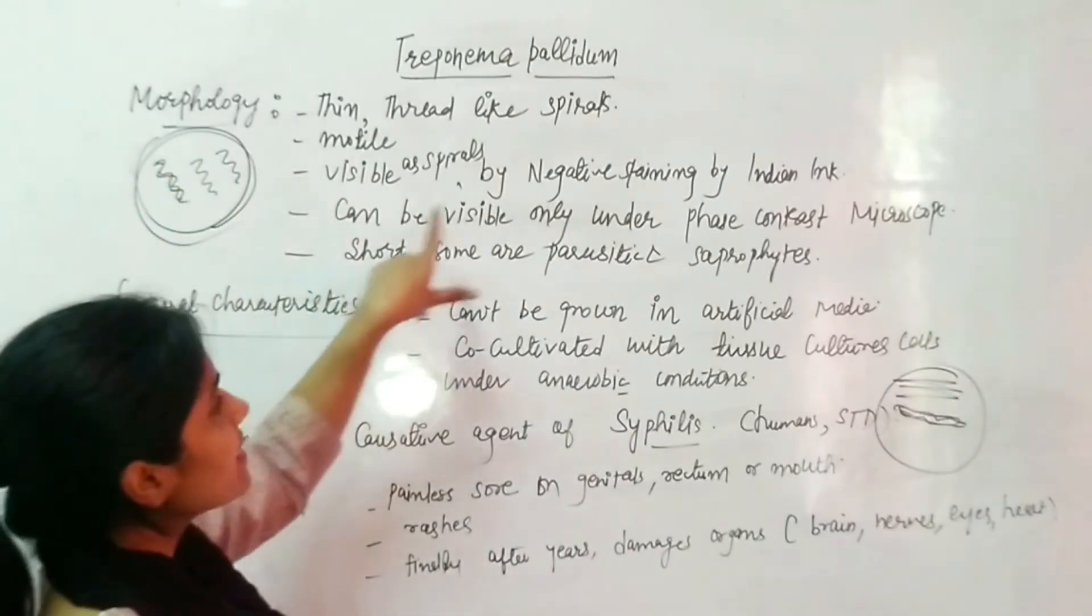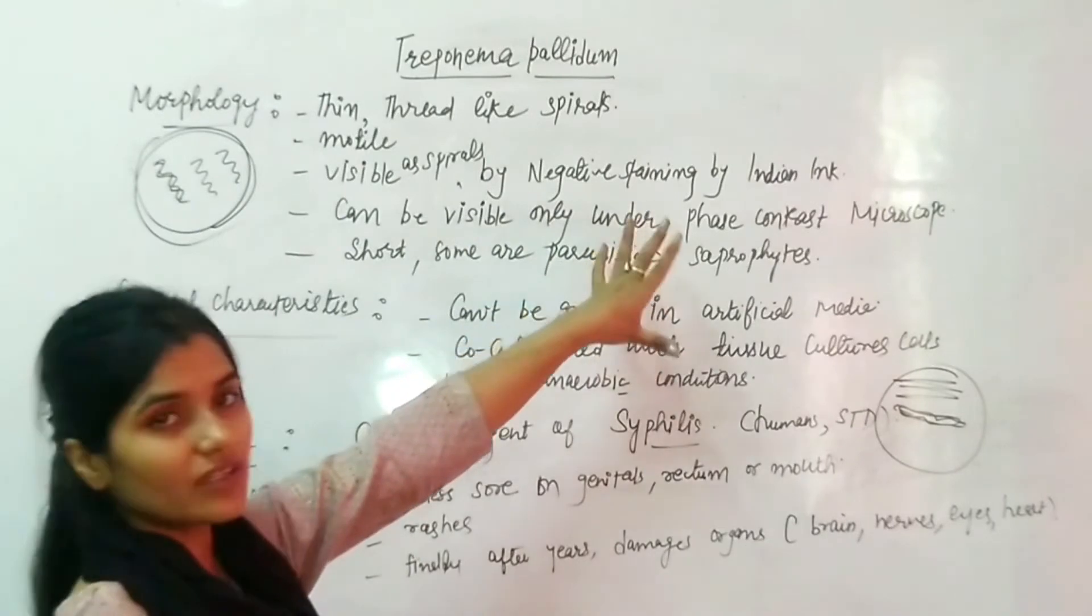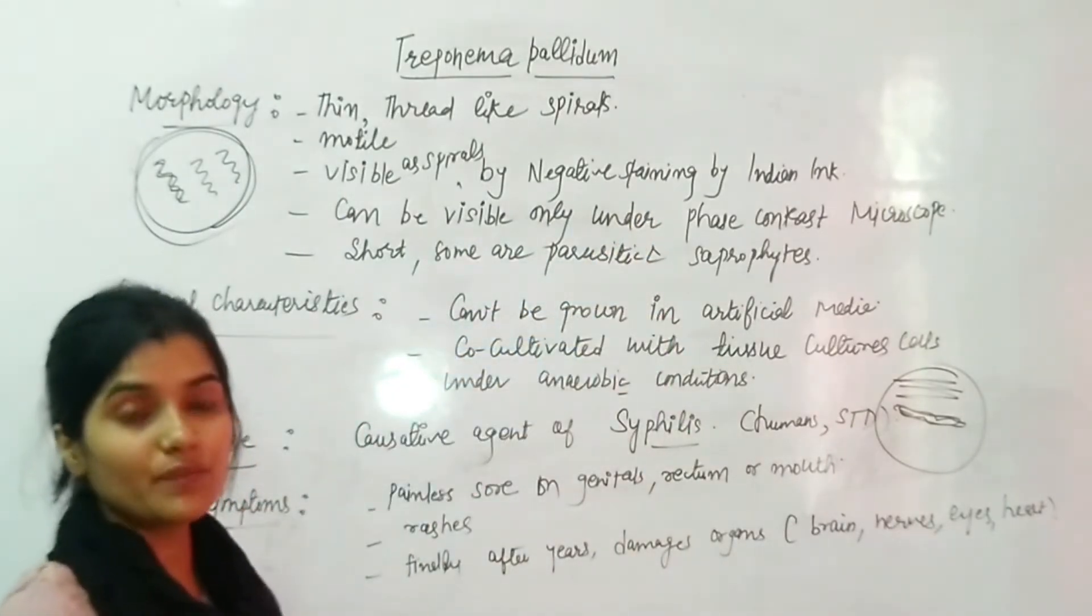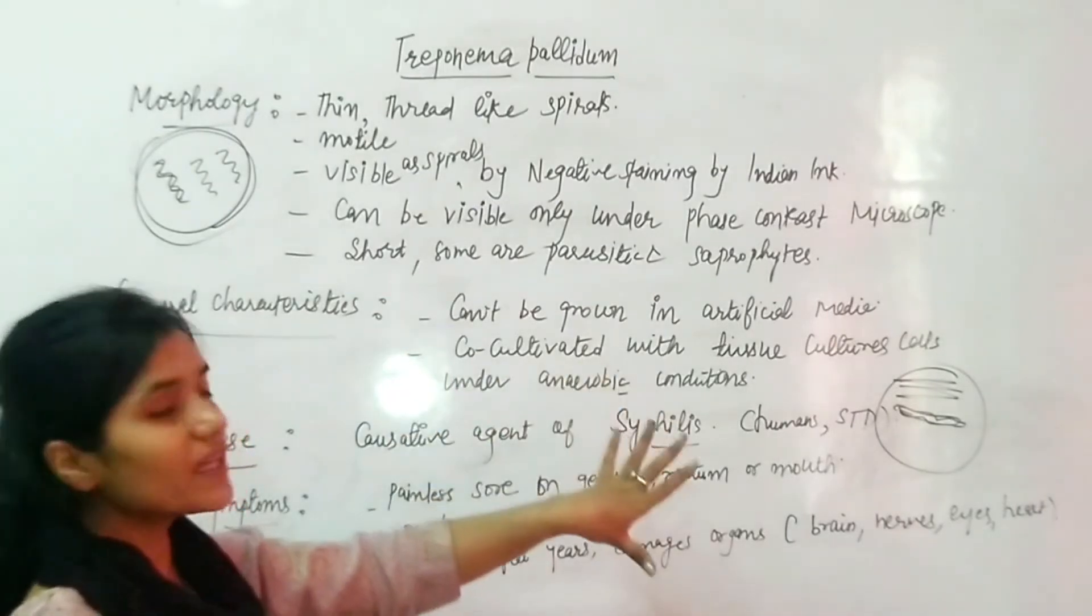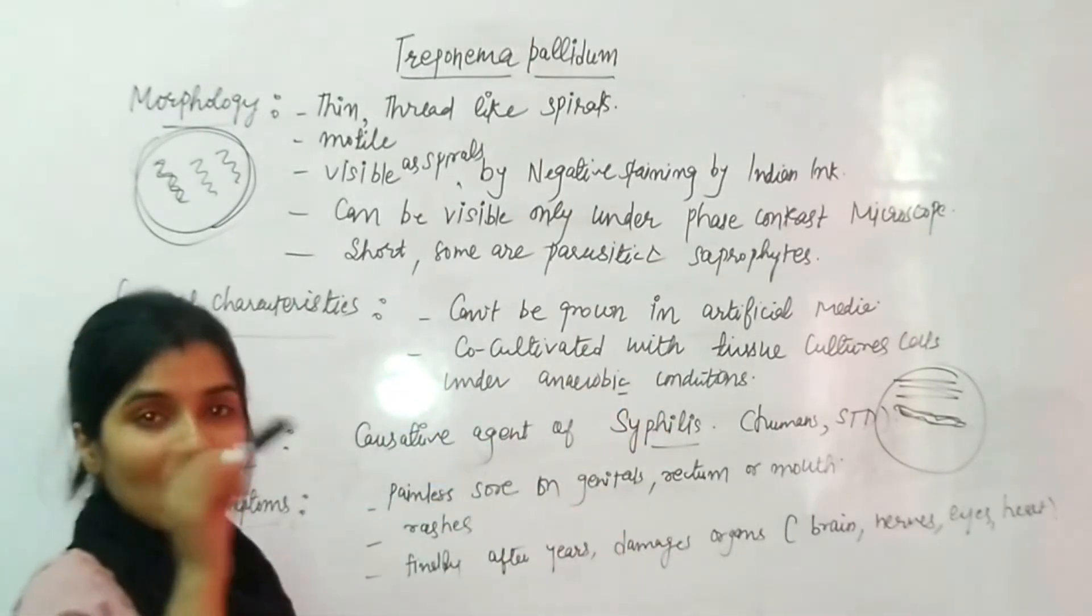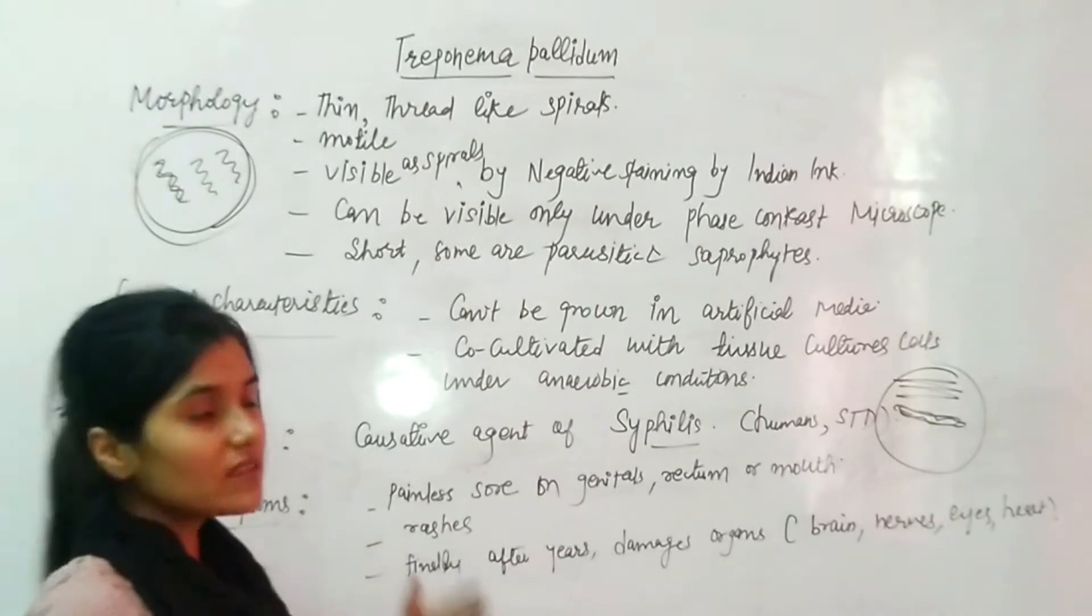This bacteria appears in negative staining using Indian ink, a dye that basically stains the capsulated structures. So if you observe it microscopically, you have brightly colored spirals.